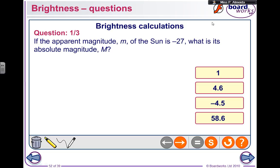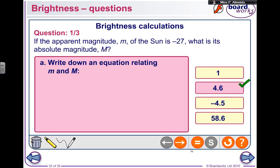If the apparent magnitude m, small m, of the sun is minus 27, what is the absolute big M magnitude? So I use the formula that I showed you in the last video, the one about absolute magnitude. And I would get 4.6.